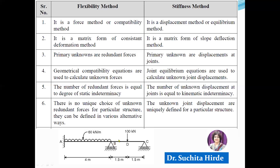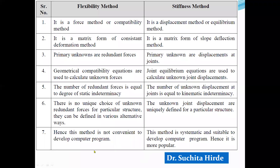Therefore, flexibility matrix method is not popular for computer programming, whereas stiffness matrix method is systematic and suitable for computer program development, which is why stiffness matrix method is more popular. In flexibility matrix method we develop the flexibility matrix, and in stiffness matrix method we develop the stiffness matrix. The components of these matrices are called flexibility coefficients and stiffness coefficients respectively.